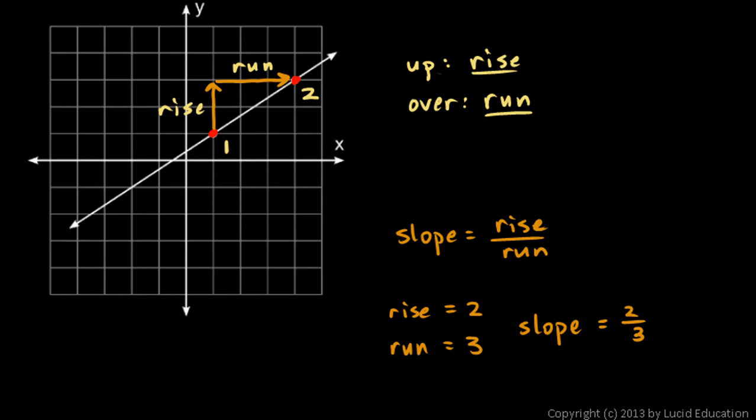And you can pick any two points you want on the line. The line is straight. That means it has the same steepness everywhere. So it turns out that any two points will do.